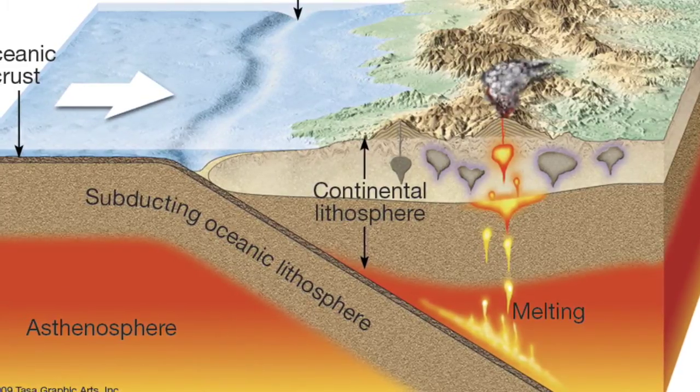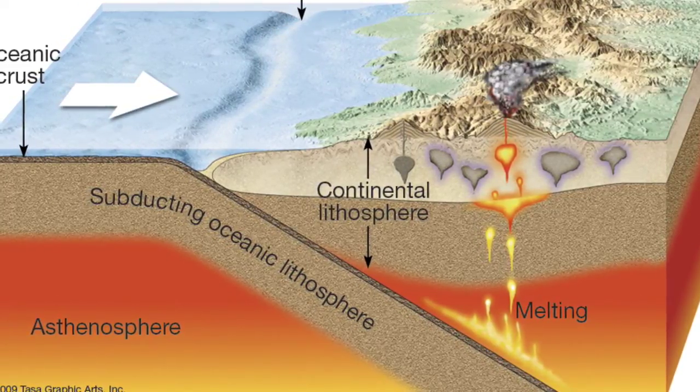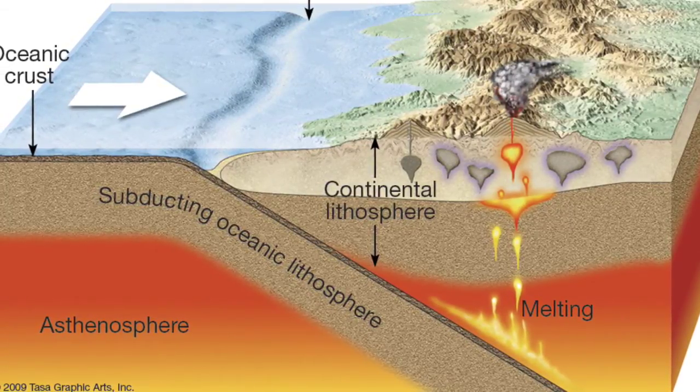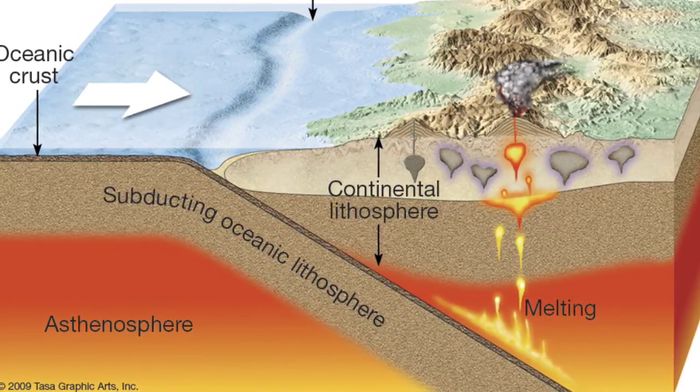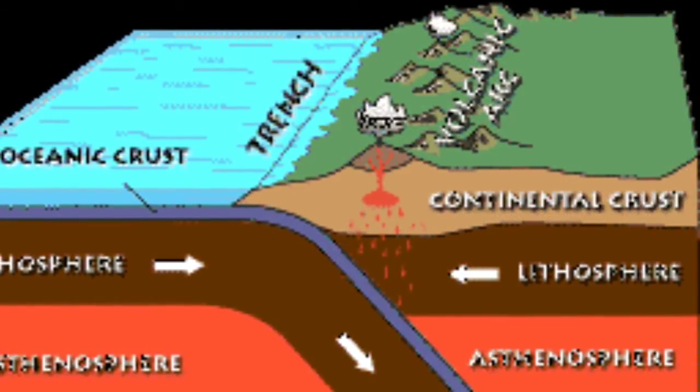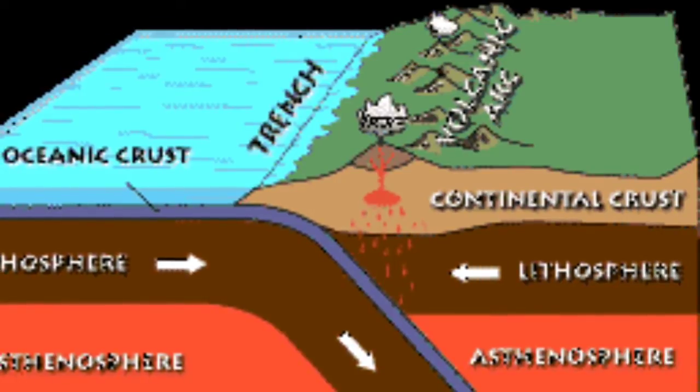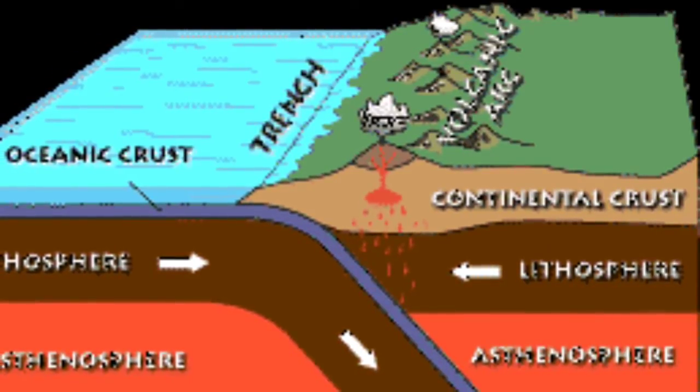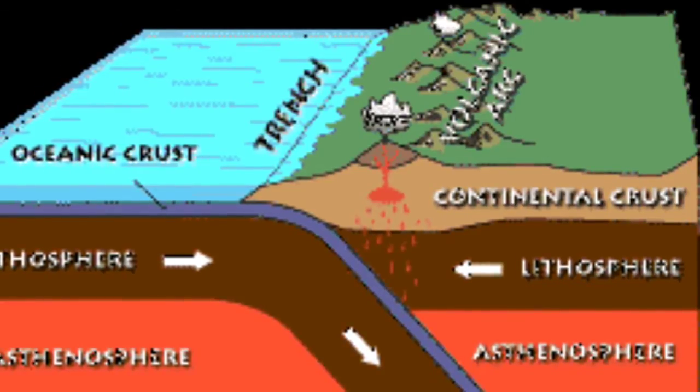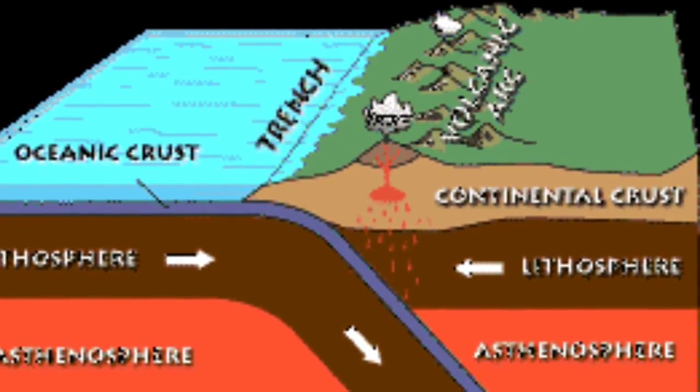This creates volcanoes because the magma is pushed up from the bottom to the surface, making volcanoes on the shoreline. In addition, it also usually creates earthquakes as well, which would be an example of a convergent interaction.